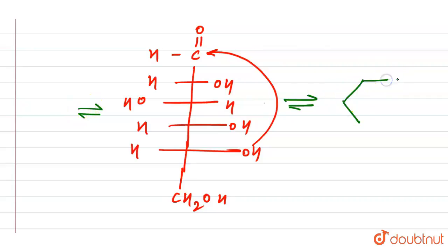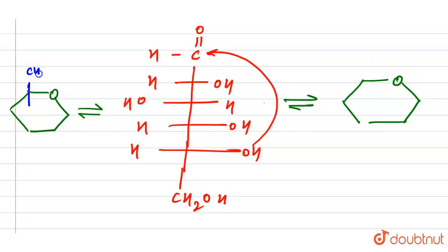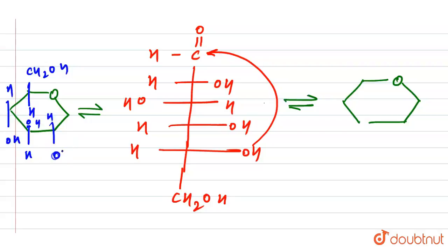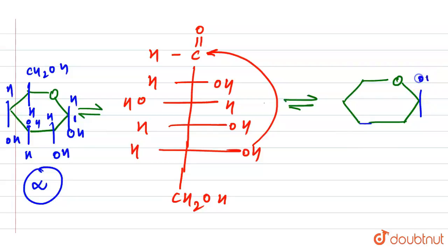When we represent the cyclic compound, here we have CH2OH, H, OH, OH, H, OH, and H. This is the first position, and this is the alpha form.